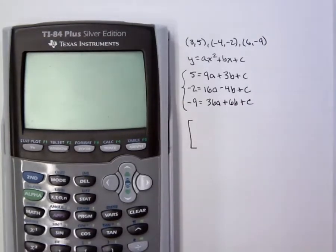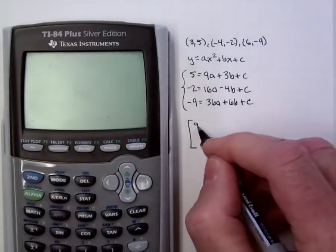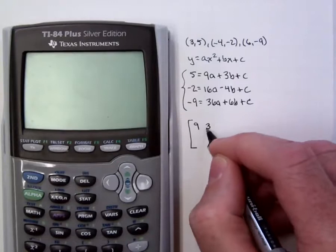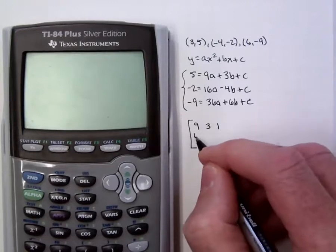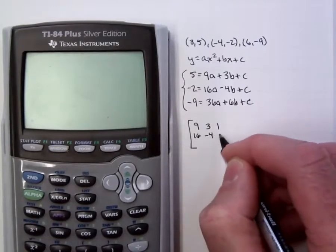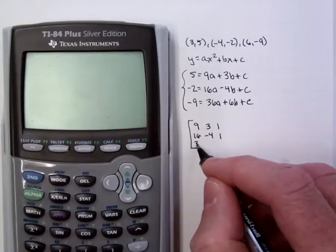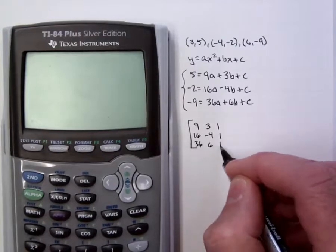Our first step is to render this system of equations into a single matrix equation. And that'll be this one, a 3 by 3 with 9, 3, 1, 16, -4, 1, 36, 6, 1, times the 3 by 1 with the a, the b, and the c.